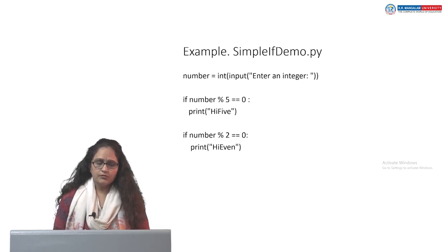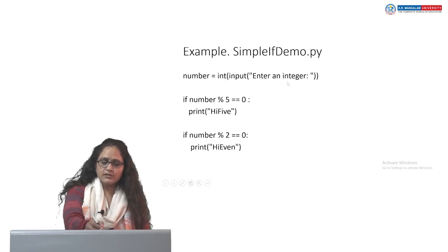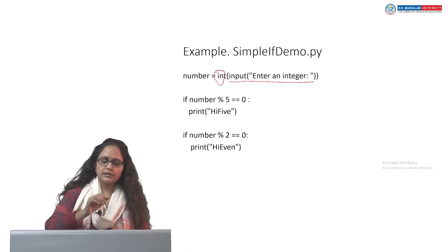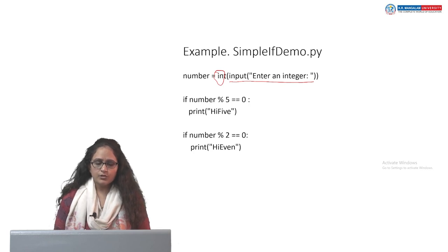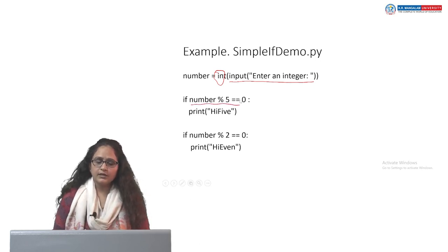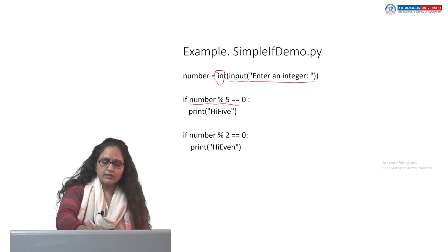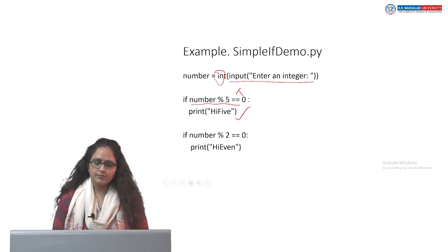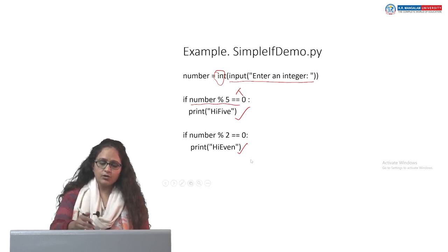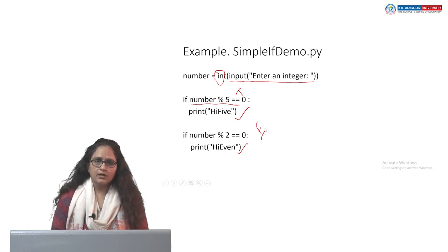Let us see some examples for simple if statements. We take user input using: number = int(input('enter an integer')). The user input is always stored as a string, so we use the int function to typecast the string value into an integer. We check if the number is divisible by 5 — if the remainder is 0, a statement is printed. Similarly, if the number is divisible by 2 and the remainder is 0, the corresponding print statement executes. These are examples of one-way if statements — we do nothing if the condition is false.